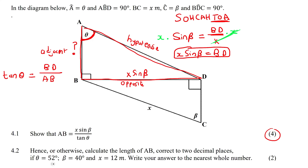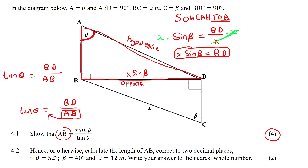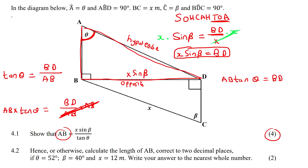Now here's where things get a little bit tricky. We have to try to get AB by itself — that is what we're looking for. So you need to somehow try and get this by itself. You're going to multiply both sides by AB so these two cancel each other out, and so now we are left with BD equals AB tan theta. Now we can divide both sides by tan theta — because now these cancel — and so all that we have left on the left is AB. On the right, we have BD over tan theta. We know what BD is — BD is x sin beta.